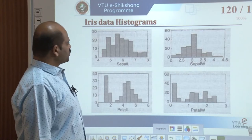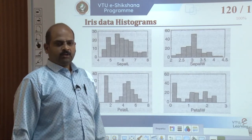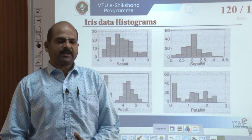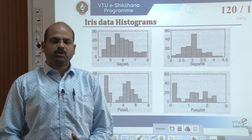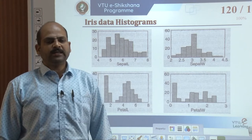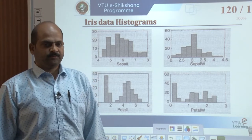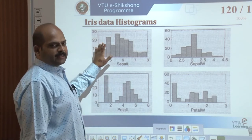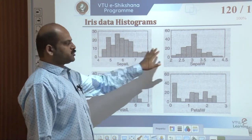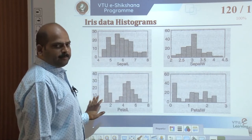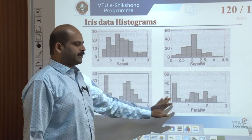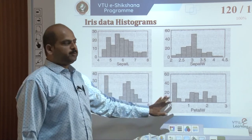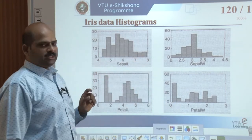Let me look at the histograms. Note that the scale of the x-axis in each histogram is chosen differently to clearly dissipate the distributions. These are shown for sepal length, sepal width, petal length, and petal width. This is how the histograms of this particular iris data are displayed.